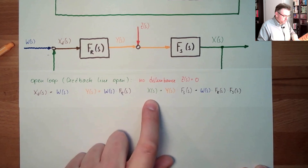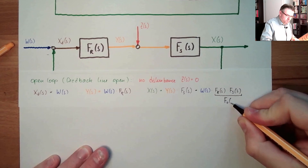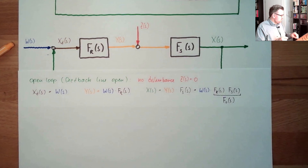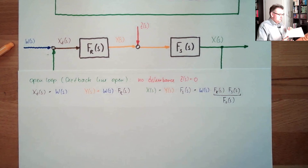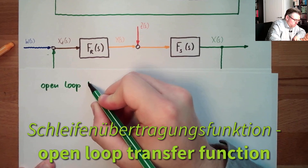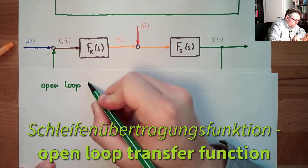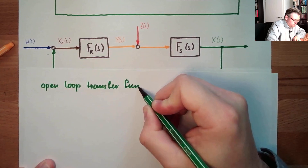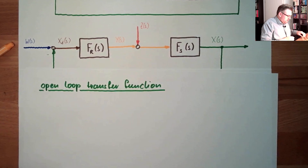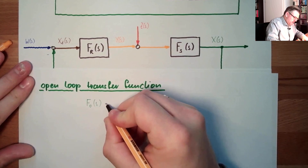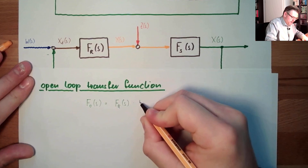So this is the output, this is the input. This here is the open loop transfer function. This is the so-called open loop transfer function — fo equals fr multiplied by fs.